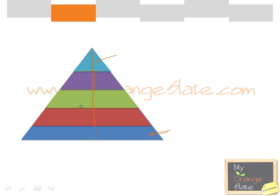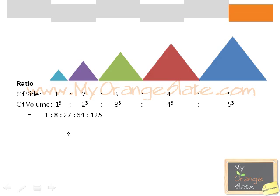Since these are similar cones, the ratio of heights would also equal the ratio of the base radii. Considering these five different cones, we get the ratio of sides as 1:2:3:4:5.